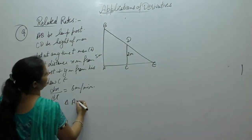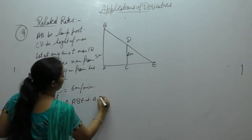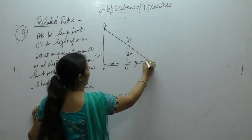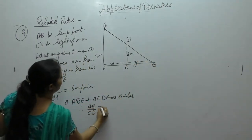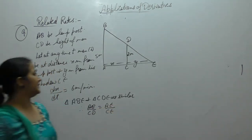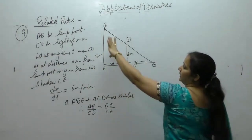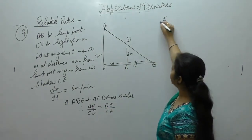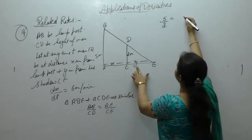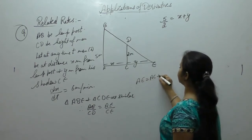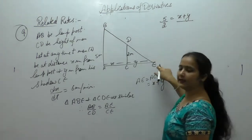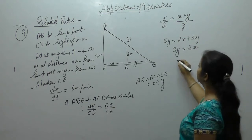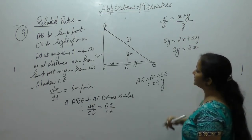Triangle ABE and triangle CDE are similar. Therefore AB upon CD equals AE upon CE. Let this distance be x and this be y. AB is 5 meter, CD is 2 meter, AE is x plus y (that is AC plus CE), CE is y. So 5y equals 2x plus 2y, giving 3y equals 2x.